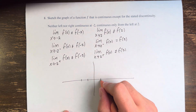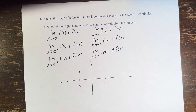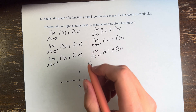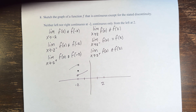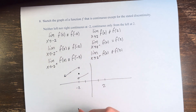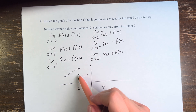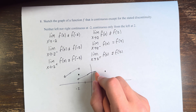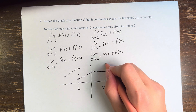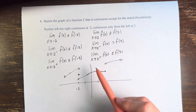So, at negative 2, if we are neither left nor right continuous, this means we have some value of the function at negative 2, and the function from the left and the right both go to values that are not the value of the function at negative 2. They could actually go to the same incorrect value, but they just have to go to values that are not the value of the function. At x equals 2, let's say the value of the function is here — from the left, we do approach the value of the function; the only issue is from the right, we approach a different value. And so this is the difference between it being neither left nor right continuous versus being only left continuous.